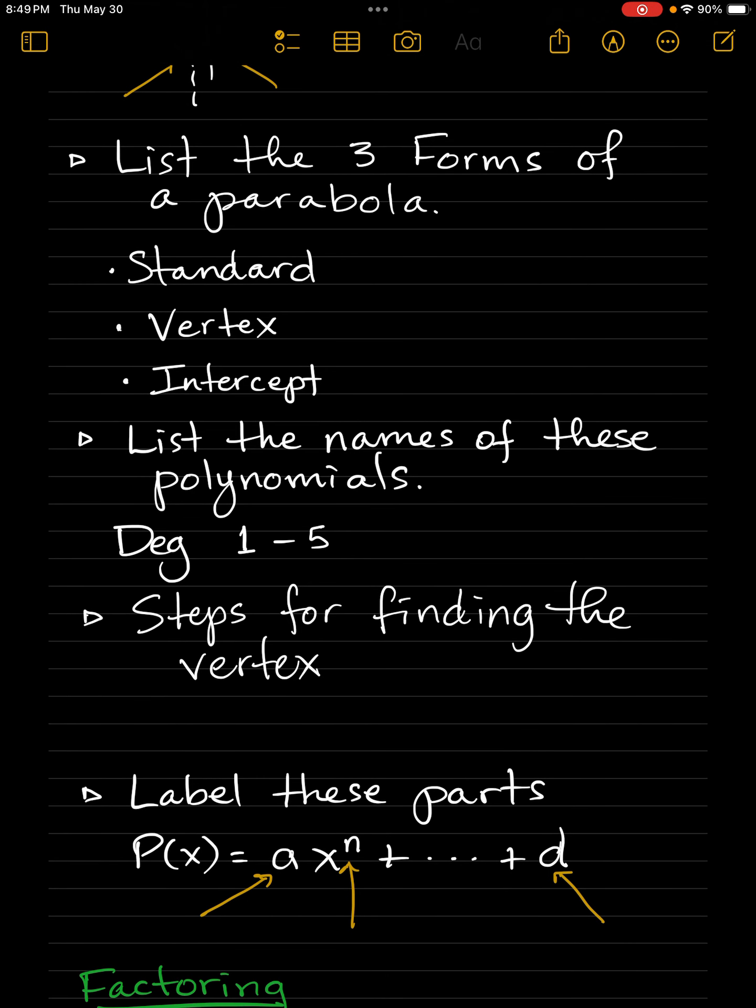Now, list the names of these polynomials. For example, degree one is linear. I'd like you to list the names of degree two, three, four, and five.